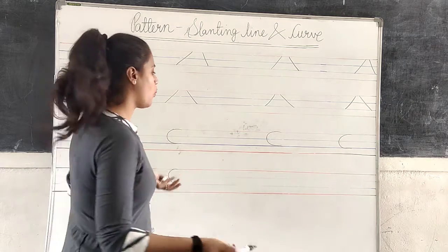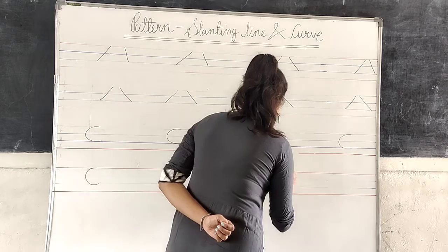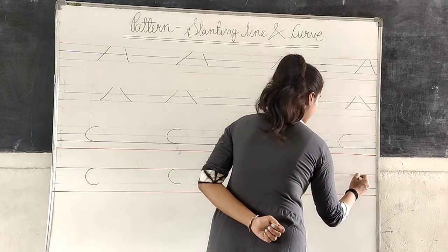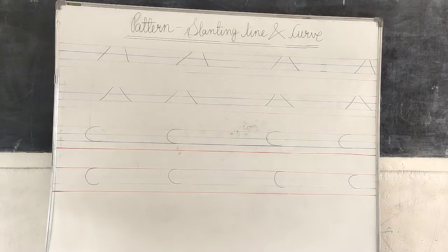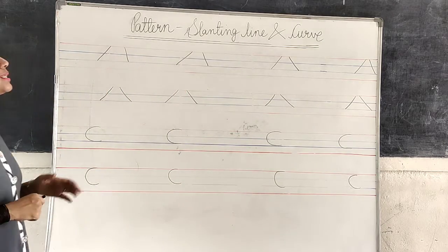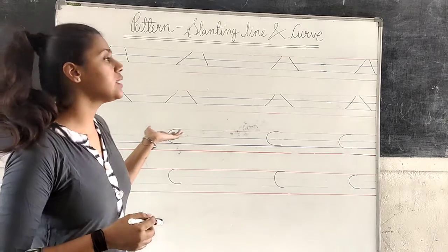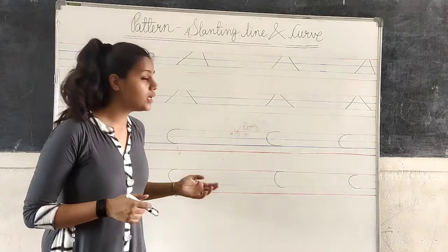This is how we have to draw a curve. Half circle. Okay. First line to third line. Okay students? This is how we can write sliding line and curve.